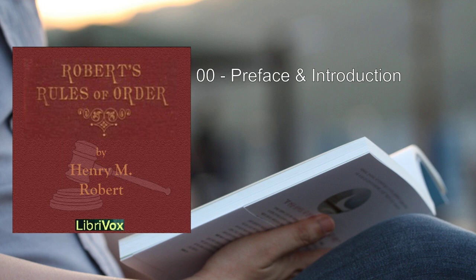This manual is prepared to partially meet the want in deliberative assemblies that are not legislative in their character. It has been made sufficiently complete to answer for the rules of an assembly until they see fit to adopt special rules conflicting with and superseding any of its rules of detail, such as the order of business (section 44). In matters of detail the practice of Congress is followed where it is not manifestly unsuited to ordinary assemblies, and in such cases in Part 1 there will be found in a footnote the congressional practice.